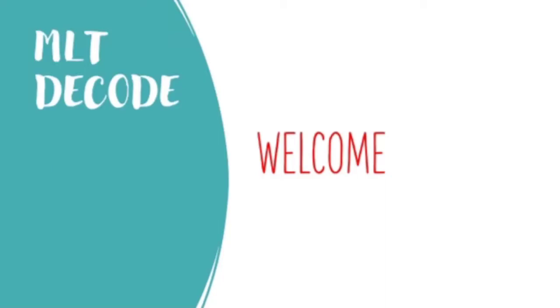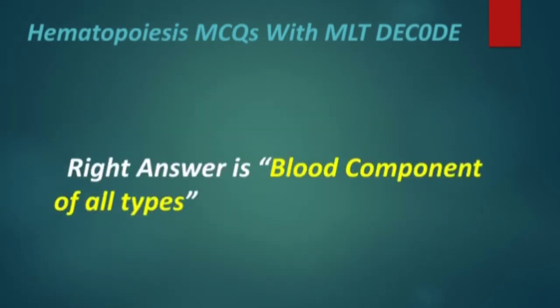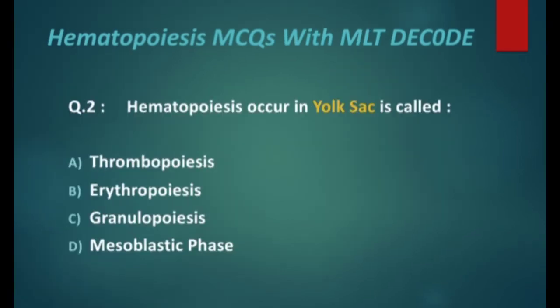Assalamu alaikum, dear students. Welcome to MLQD Code. This is the first lecture on the hematology playlist. The topic is hematopoiesis. The first MCQ is: hematopoiesis or hemopoiesis is the formation of RBCs, platelets, WBCs, or blood cellular components of all types? The right answer is blood cellular components of all types.